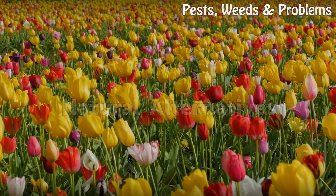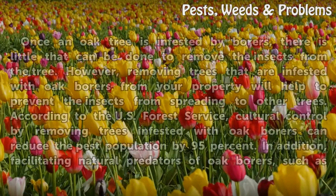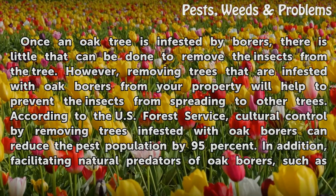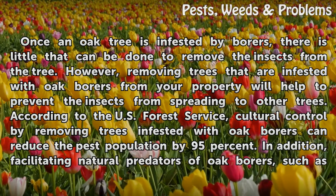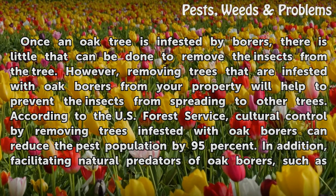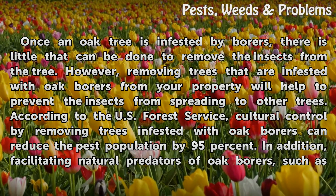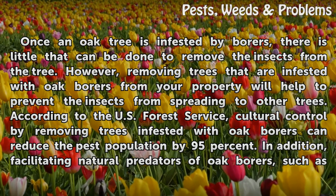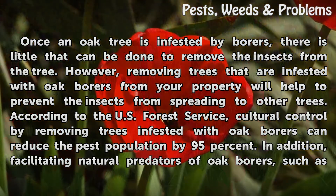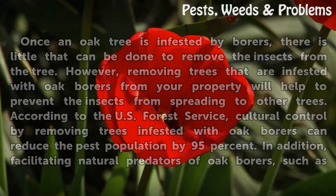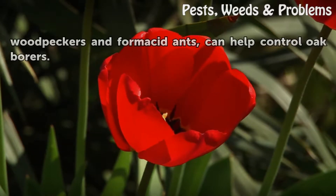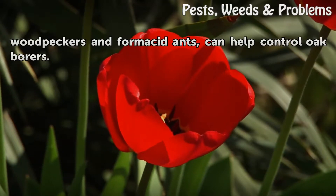Natural Alternatives. Once an oak tree is infested by borers, there is little that can be done to remove the insects from the tree. However, removing trees that are infested with oak borers from your property will help to prevent the insects from spreading to other trees. According to the U.S. Forest Service, cultural control by removing trees infested with oak borers can reduce the pest population by 95%. In addition, facilitating natural predators of oak borers, such as woodpeckers and formacid ants, can help control oak borers.